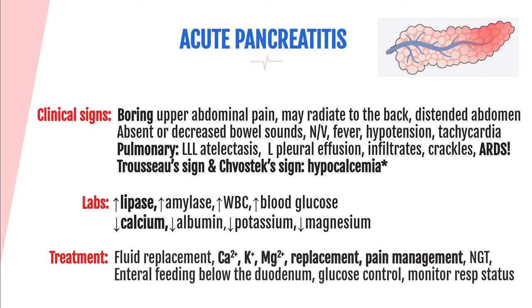These patients may also have pulmonary problems because the pancreas lies right underneath the diaphragm, which it can irritate. This causes lung issues, most likely on the left side: left lower lobe atelectasis, left pleural effusion, and infiltrates. They can also have pulmonary edema and crackles due to the inflammatory response making capillaries leaky, leading to third-spacing. These patients can certainly develop ARDS, so ensure a close lung assessment and monitor for respiratory distress.